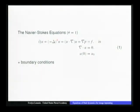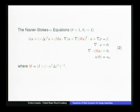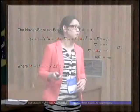I'll start with the Navier-Stokes equations — no explanation needed, but I need to introduce notations. When theta is 1, we have the usual Navier-Stokes equations. If I put some regularization operator M and vary the power, I essentially get different types of turbulence models.